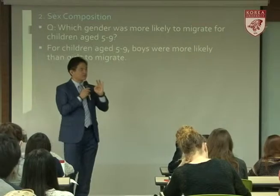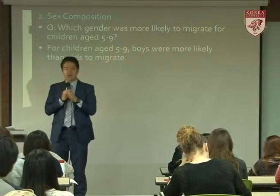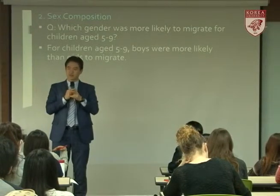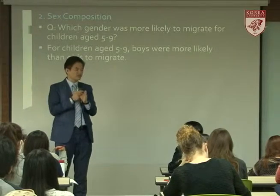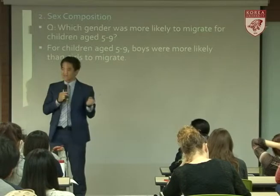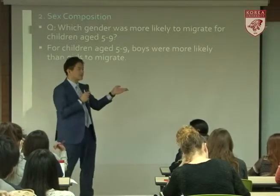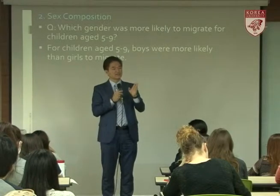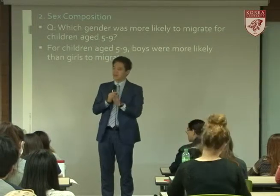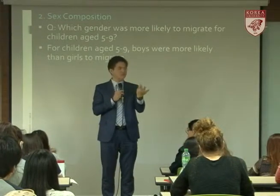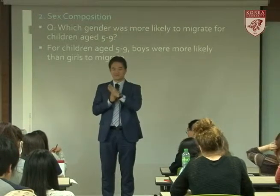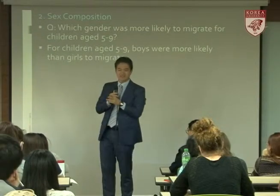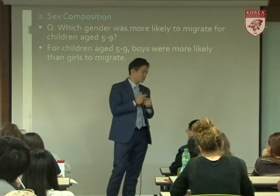Back in the 1960s and 70s, when many families had to choose which children to send to urban centers for better education, boys and girls didn't have the same chance. Many families were poor and could only support education for one or two children. When that choice had to be made, they typically chose males.